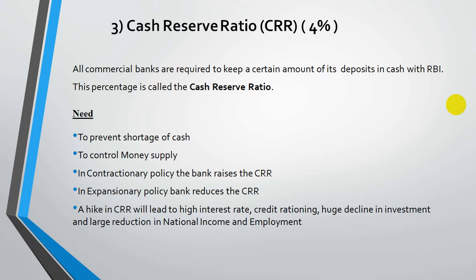In contractionary policy, the bank raises the CRR so that banks have lesser money, reducing lending activities, production activities, and demand-supply. In expansionary policy, banks reduce the CRR so banks have more money at disposal, increasing money supply. A high CRR leads to high interest rates, credit rationing, huge decline in investment, and large reduction in national income and employment.